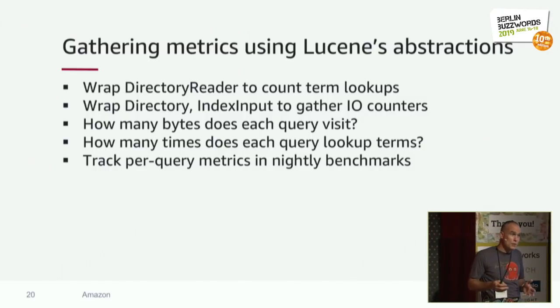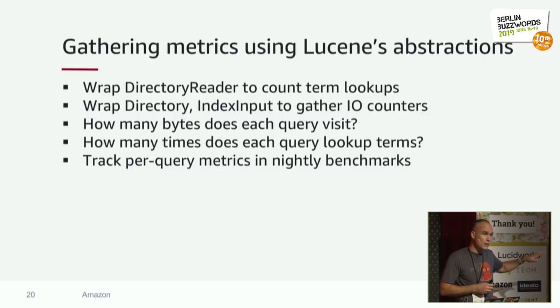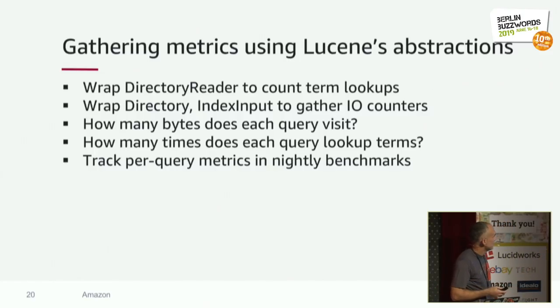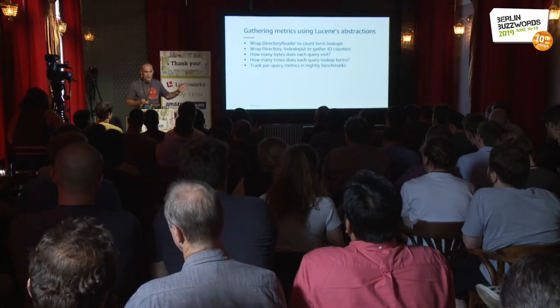Our benchmarks tap into amazing metrics enabled by Lucene's abstractions. DirectoryReader is the abstraction for reading an index from disk — we use it to count term dictionary lookups, which are costly. We wrap Directory and IndexInput to gather I/O counters: how many IOPS did a query do, how many bytes did it read. If a change doubles the bytes read, we go back and understand why. These abstractions, which Doug Cutting had the foresight to create in 1999, are incredible tools for gathering custom metrics for a search engine.